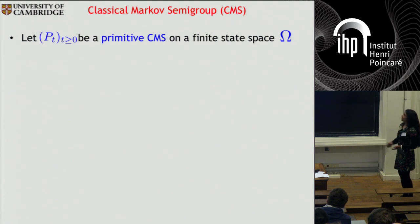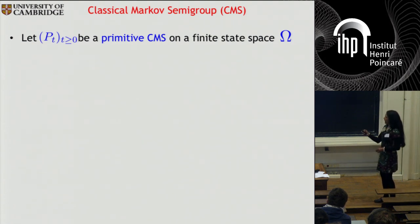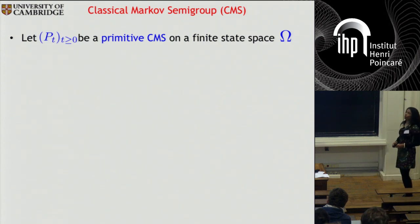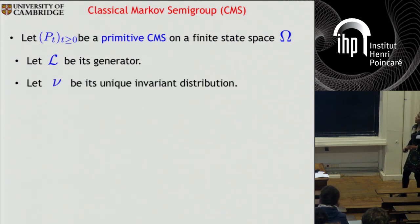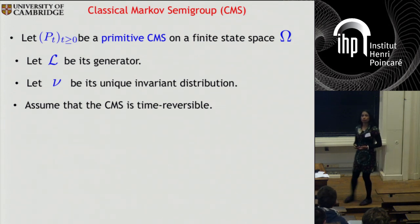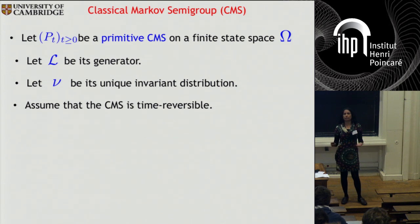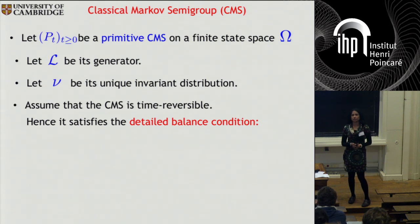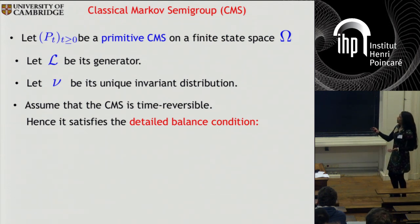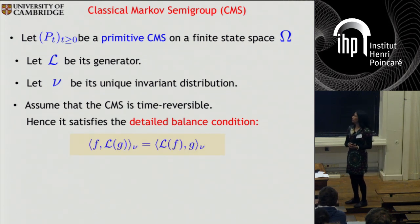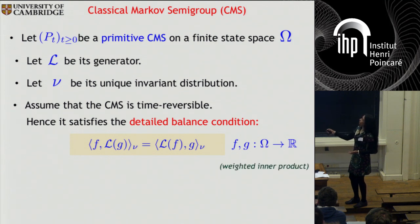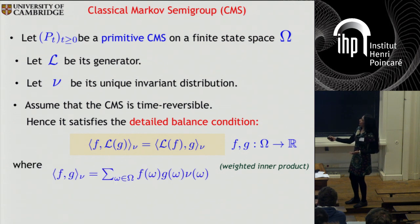Let's start with the classical case. We denote by Pt this one-parameter family and consider it to be a primitive classical Markov semigroup on a finite state space. Let L be its generator and let nu be its unique invariant distribution. Assume that the classical Markov semigroup is also time-reversible, which means it satisfies the detailed balance condition. The characterization we use — particularly useful for generalizing to the quantum setting — is the self-adjointness of the generator with respect to a weighted inner product, where for any f and g this inner product is f(omega) g(omega) nu(omega).